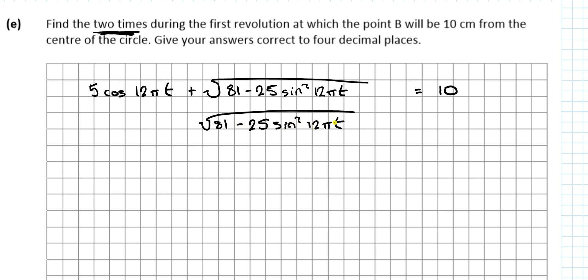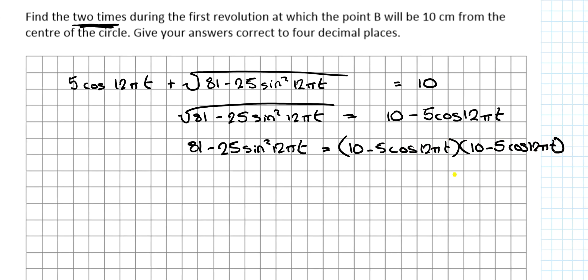I should get the square root on its own. So get the square root on its own by subtracting 5cos(12πt) from both sides. Now square both sides, you'd get rid of the square root. So the square root equals 10 minus 5cos(12πt) squared. It's 81 minus 25 sin squared 12πt equals 10 by 10 is 100 minus 50 cos 12πt. And minus 5 cos 12πt by 10 is minus 50 - so this actually is just minus 100.